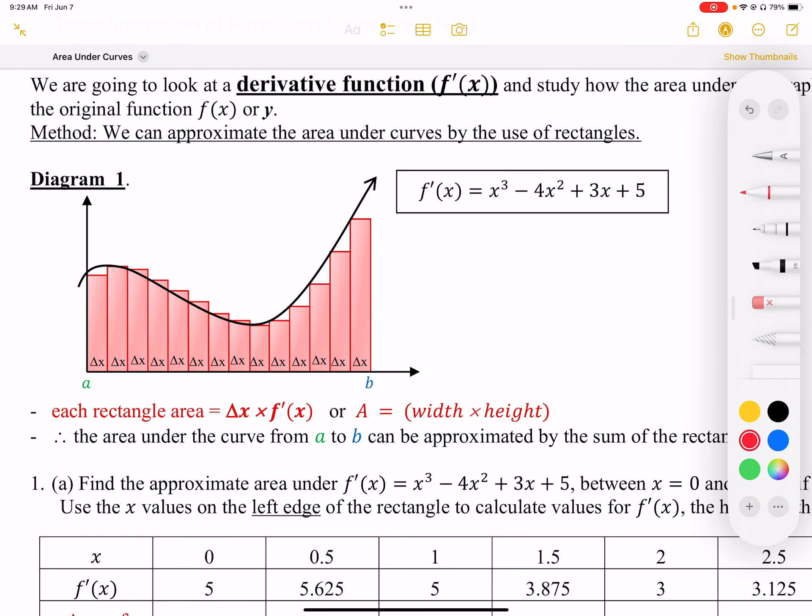The area will be approximated with these rectangles. Each rectangle area equals the height, which is the y-coordinate of the curve, times the width of the rectangle, which we can arbitrarily choose. These areas we're going to add up.